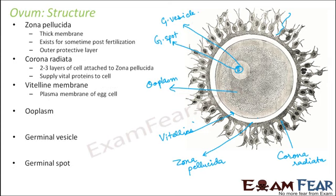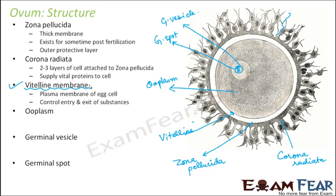Next is the vitaline membrane, which is nothing but the plasma membrane of the egg cell. Every cell has a plasma membrane, and so does the egg cell. The plasma membrane of the ovum is given a different name — the vitaline membrane. Its purpose is the same: it controls the entry and exit of substances, allowing only specific substances to pass through and controlling passage across it.